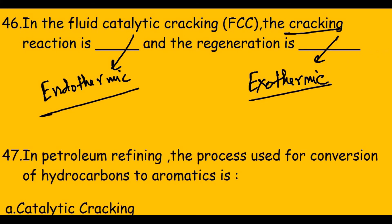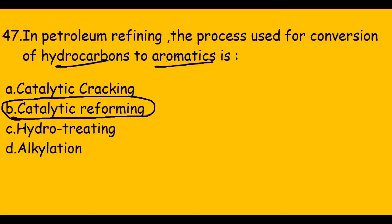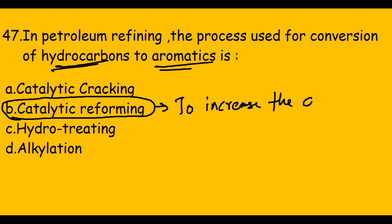This question asks: in petroleum refining, the process used for conversion of hydrocarbons to aromatics is — the answer is catalytic reforming. Catalytic reforming is used for converting hydrocarbons into aromatics. Also keep note that catalytic reforming is done to increase the octane number.